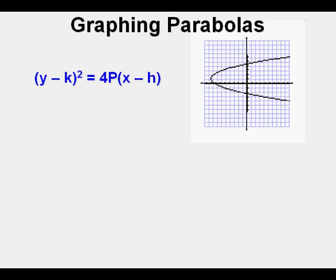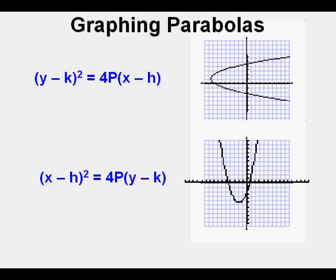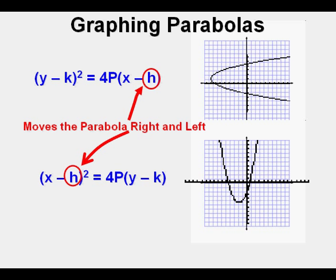And there is (x - h)² equals 4P times quantity (y - k). As in the other forms of the conics, the h moves the center or vertex of the parabola right and left. X minus a number moves the parabola to the right and x plus a number moves the parabola to the left.